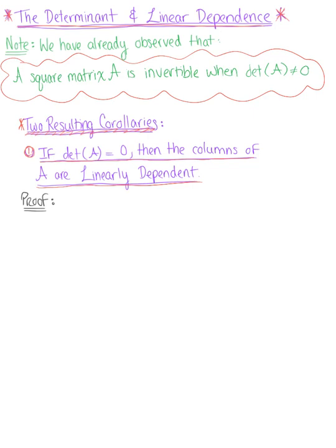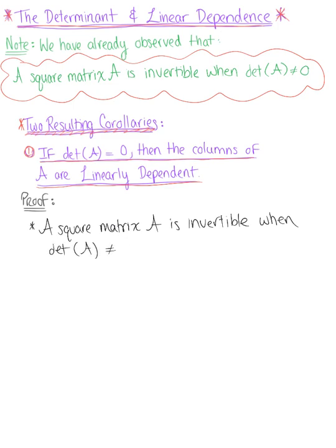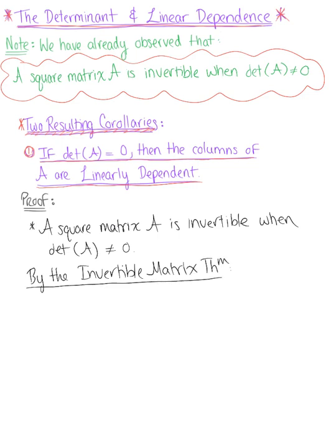This proof is quick. Keeping in mind that a square matrix A is invertible when the determinant does not equal 0, we want to reference back to the invertible matrix theorem from section 2.3. By the invertible matrix theorem, we know that if A is invertible, then the columns of A are linearly independent — that is, if A is invertible, this is equivalent to saying that the columns of matrix A are linearly independent.